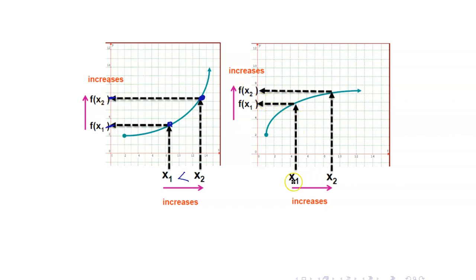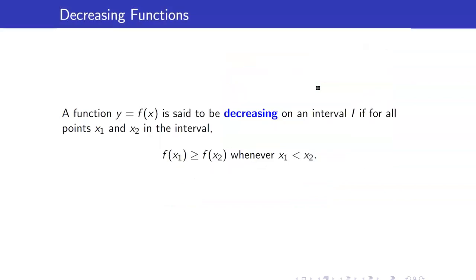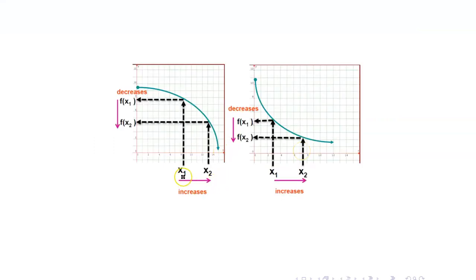Your graph can also look like this. Here, as x increases, the y-coordinates get bigger and bigger. Similarly, we define the function to be decreasing whenever f(x1) is greater than or equal to f(x2) whenever x1 is less than x2. So here, as x increases, the value of y decreases — that's why this is a decreasing function.